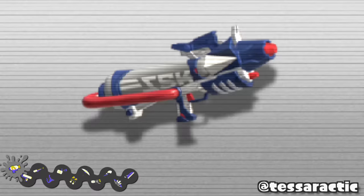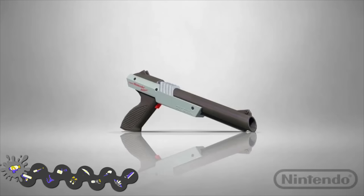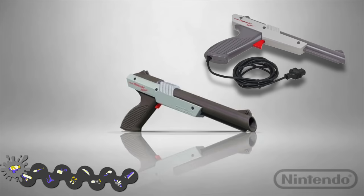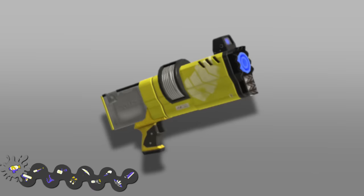The Splattershot Pro is based on the Super Soaker CPS 2000, once again just being another popular water gun. The NZAP 85 is of course the NES Zapper, and obviously the 85 referencing the release year 1985 for the Nintendo Entertainment System.